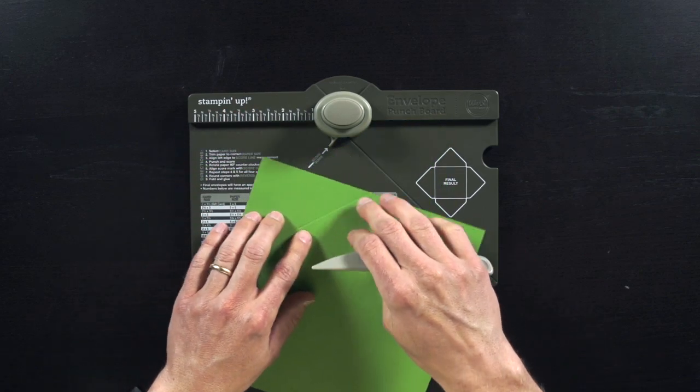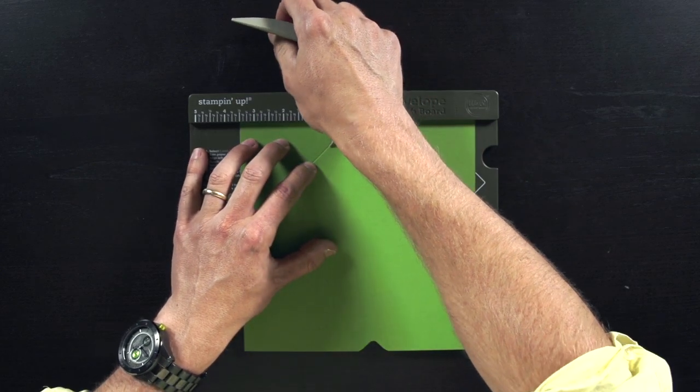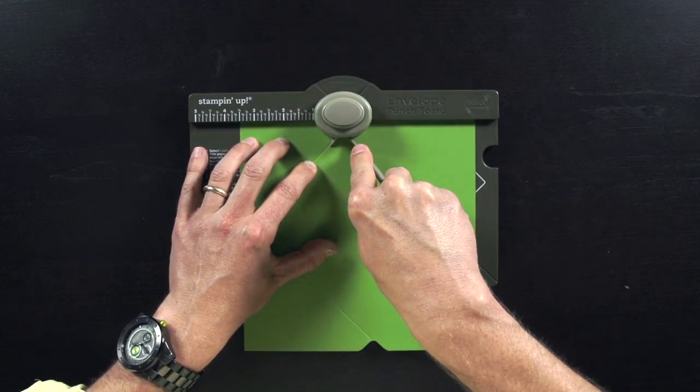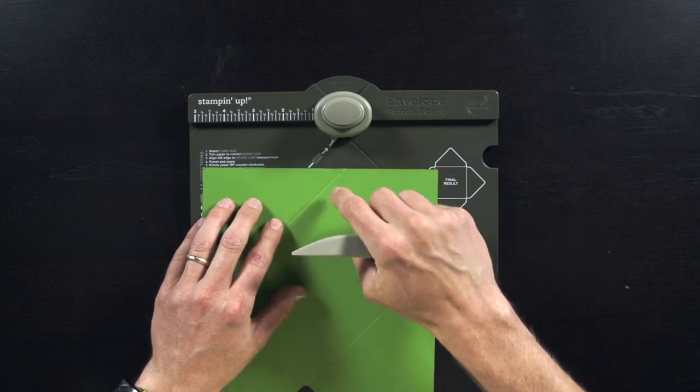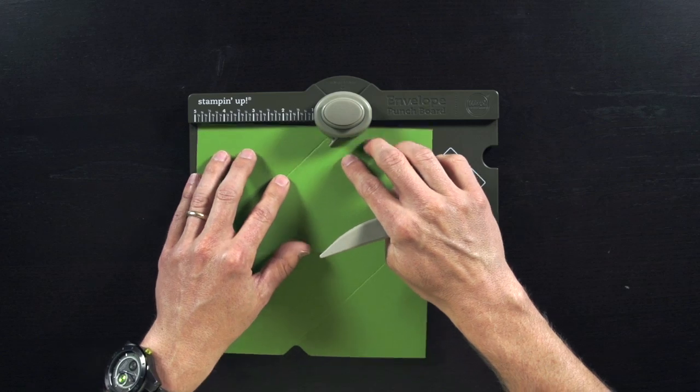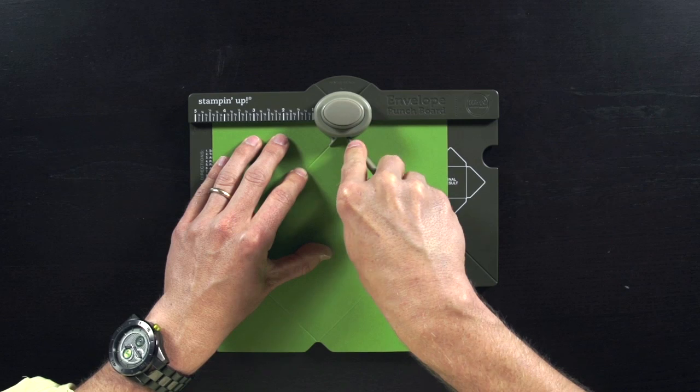I'm going to turn it again. Again, I'm going to line up my score line with that score guide right there. I'm going to punch, and then I'm going to score. Then I'm going to turn one more time, my line right there with the score guide. I'm going to line that up. I'm going to punch, and then I'm going to score.